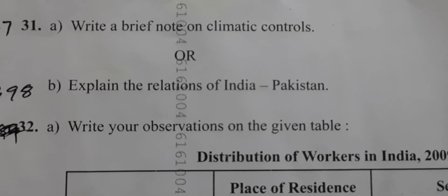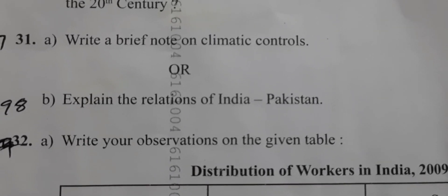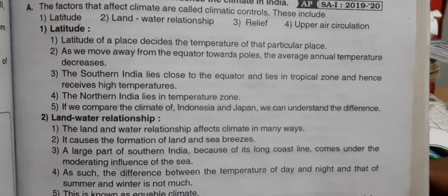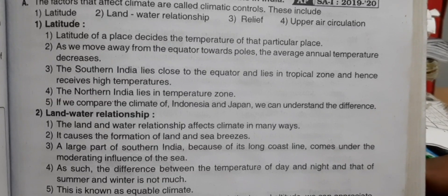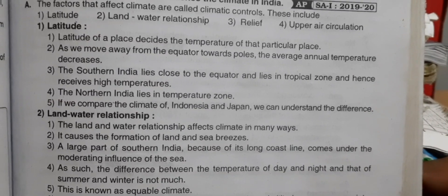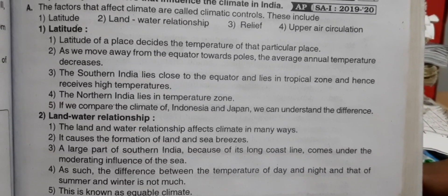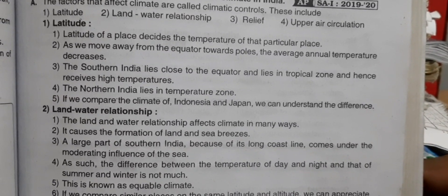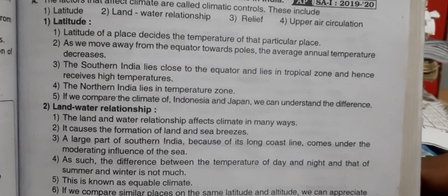Question 31: Write a brief note on climatic controls. Factors that affect climate are called climatic controls. These include latitude, land-water relationship, relief, and ocean circulation.